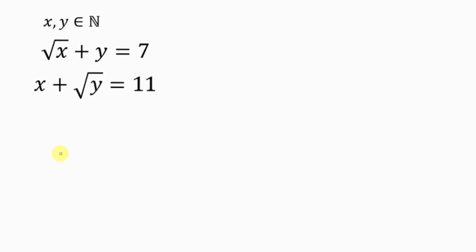Welcome back to my YouTube channel. Look at this nice and beautiful question we have here on the board. The question says: if x and y are natural numbers such that the square root of x plus y is equal to 7, and x plus the square root of y is equal to 11, find the values of x and y.